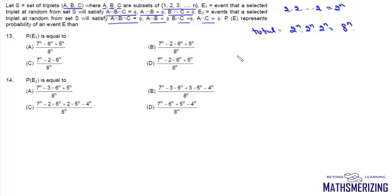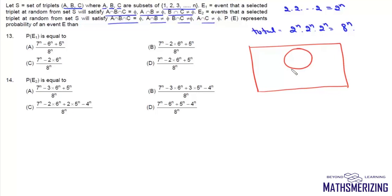Now we need to find the probability that A∩B∩C = ∅ but A∩B ≠ ∅ and B∩C ≠ ∅. If we look at the event diagram — suppose this is A, B and C — if we look at the regions, this is region 1, 2, 3, 4, 5, 6, 7 and 8.